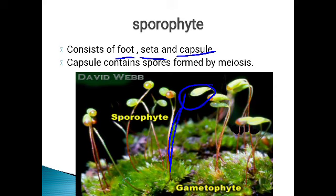Some examples of mosses are Funaria, Polytrichum, and Sphagnum. The picture shown is Funaria. So that is about the two divisions of bryophytes — liverworts and mosses.